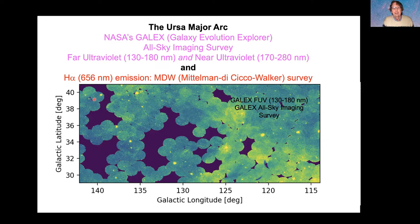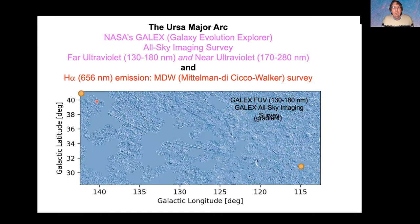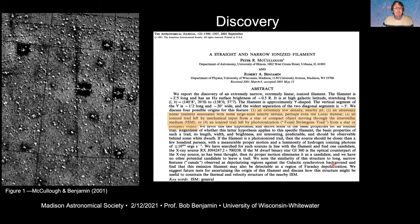We had originally found a piece of it in H-alpha, but it kept going and I sometimes kick myself — I could have been doing this 20 years ago if I'd encouraged Peter to keep searching along the arc. Instead we stuck with the two and a half degrees we found. Using the gradient of the data enables us to see it more clearly all the way to the end. This is a big circular arc in the sky — very faint, ionized gas.